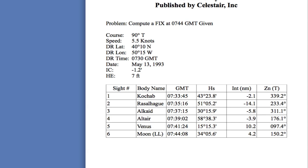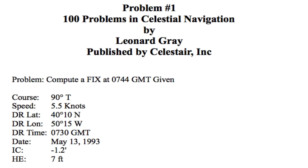The first problem in the book requires you to compute a fix on May the 13th of 1993 at 0744 GMT, given that you're on a vessel on a course of 90 degrees true, running at a speed of 5.5 knots, with a DR latitude and longitude as dictated in the problem, a DR time of 0730 GMT, an index correction of minus 1.2 minutes, and a height of eye of 7 feet.